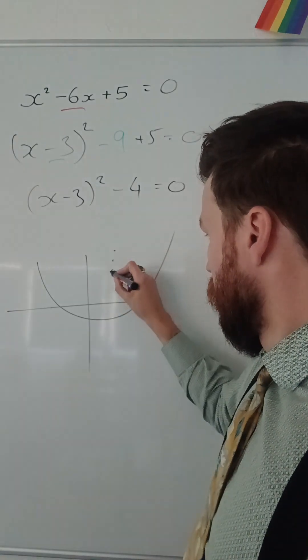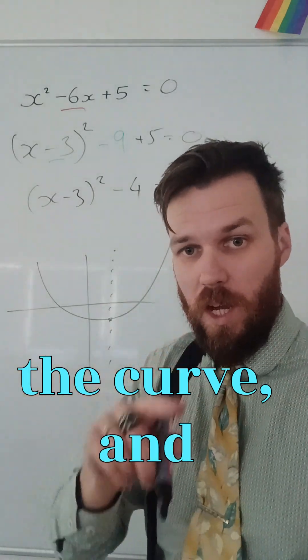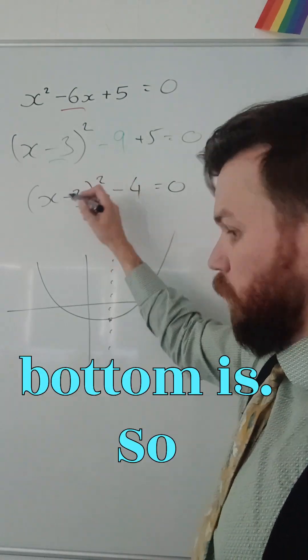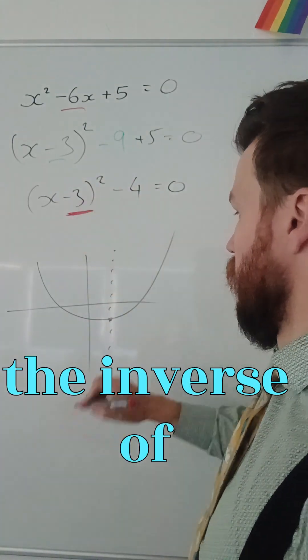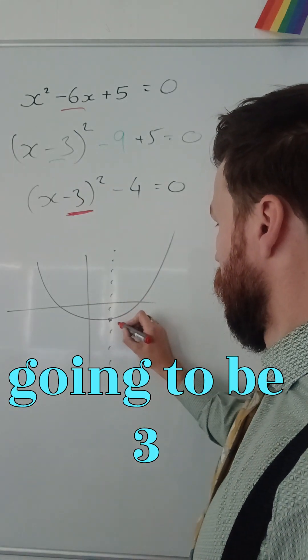Now, the line of reflection is going to be at the very middle, the very bottom of the curve, and this tells me where the bottom is. So, it's going to be an x-coordinate, or the inverse of this, so it's going to be 3 along.